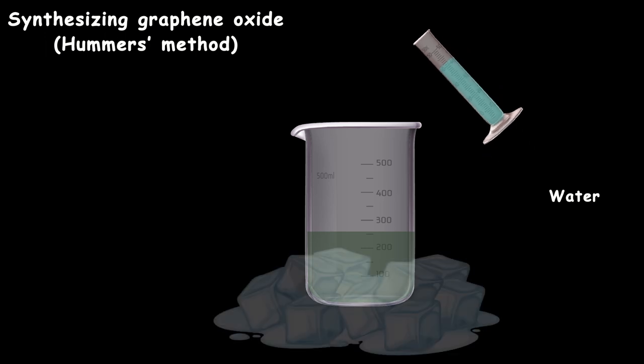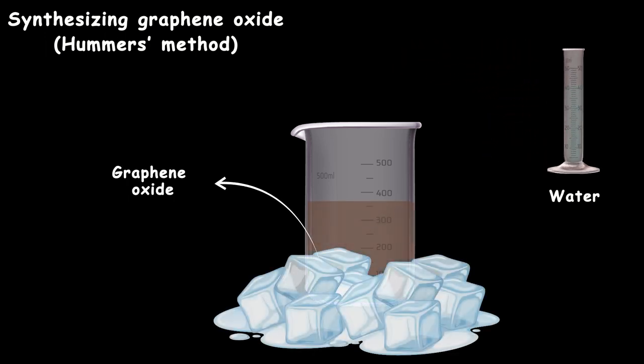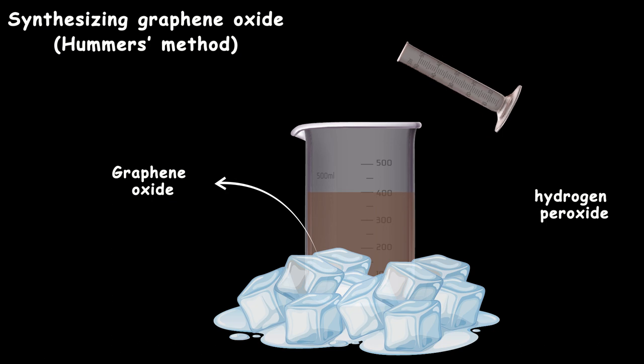Afterward, the reaction should be diluted with water, which produces a high amount of heat, so we should keep the temperature low with ice. Otherwise, it would be really dangerous. Finally, hydrogen peroxide should be added, which removes the excess potassium permanganate to end the reaction.